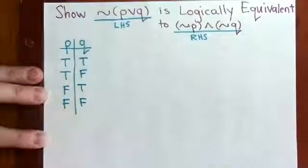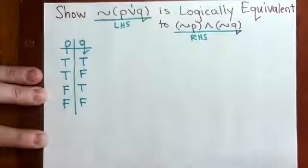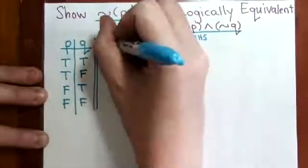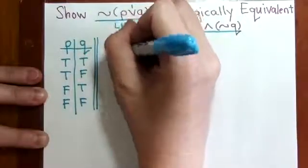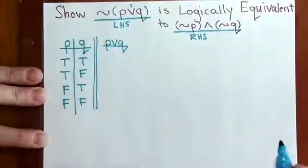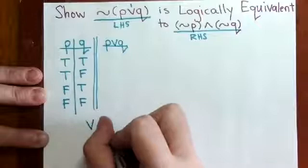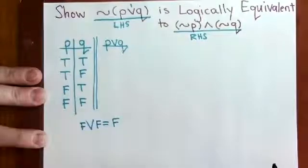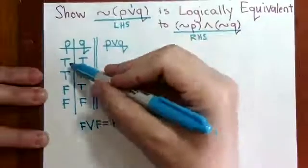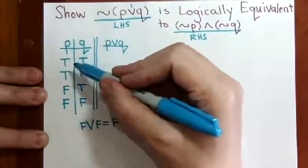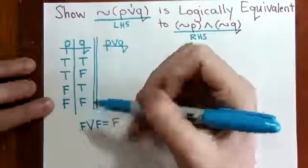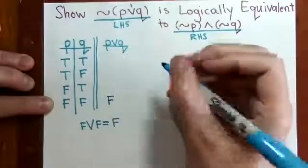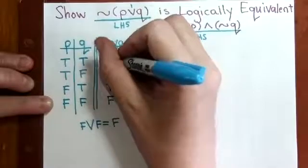Now the first thing we can do is what's inside the grouping symbols, so P or Q. If you recall, the OR is FALSE only when everything is FALSE. So looking at our two columns, the P and Q, we have two FALSEs in the fourth row, so here our OR is FALSE. Otherwise TRUE.